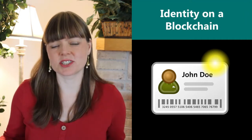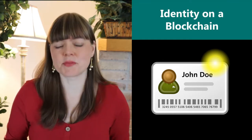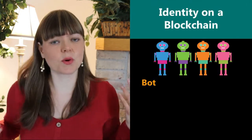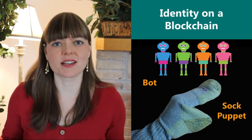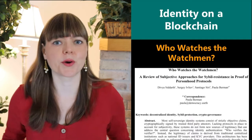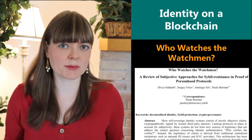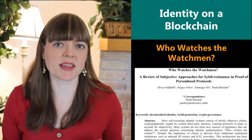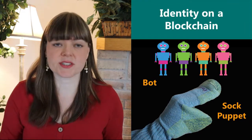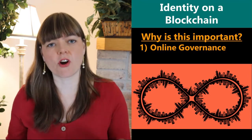How exactly can blockchain establish identity or proof of personhood? This is actually a more complicated problem than you might think, but it's really important if we want to overcome some of these problems with bots or sock puppets being able to take over an online space. In this video I'm going to go through eight mechanisms that come from an article called 'Who Watches the Watchmen,' which explains subjective means of establishing that a person is a real human being and not a bot or sock puppet.